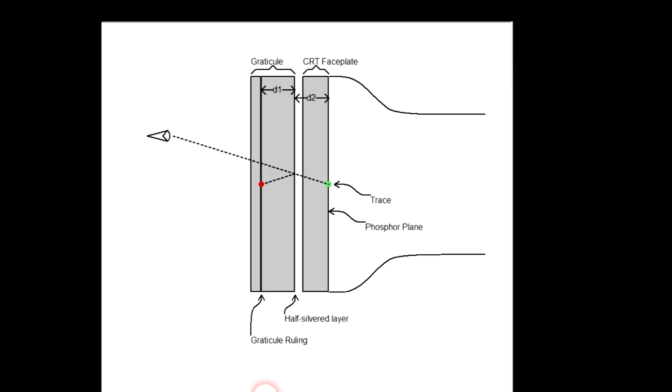If D1, the distance between the physical grooves and the half-silvered layer is the same as D2, the distance from the half-silvered layer to the phosphor plane, the images of the graticule grooves and the trace will always align regardless of the viewing angle.